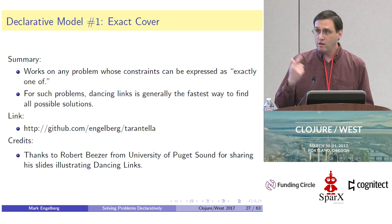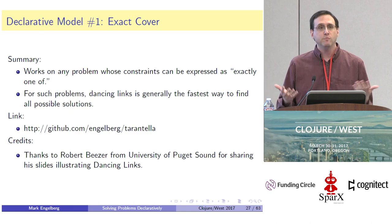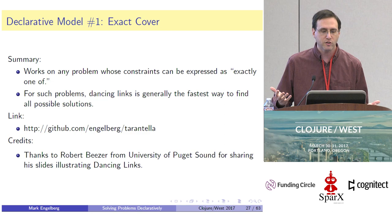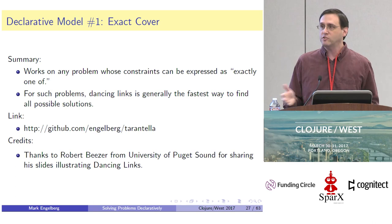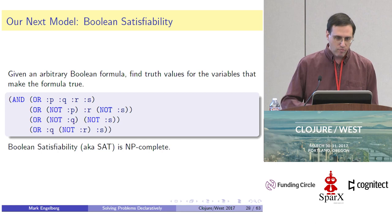That brings us to the end of declarative model number one of three: the Exact Cover problem. It works on any problem whose constraints can be expressed as 'exactly one of,' and for such problems Dancing Links is generally going to be the fastest way to go. Another puzzle that involves exactly-one constraints is Sudoku — you can use a very similar technique to turn a Sudoku grid into a matrix of ones and zeros and get one of the most blazingly fast Sudoku solvers around.